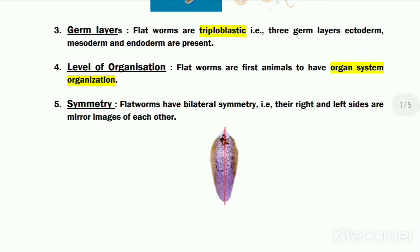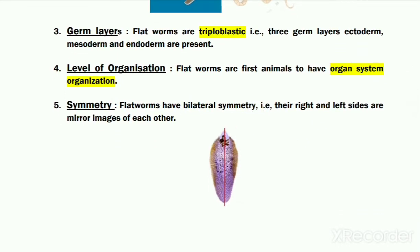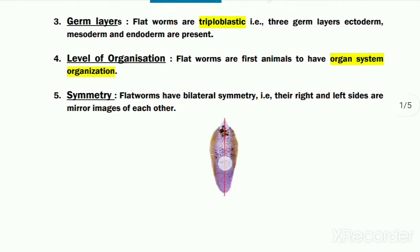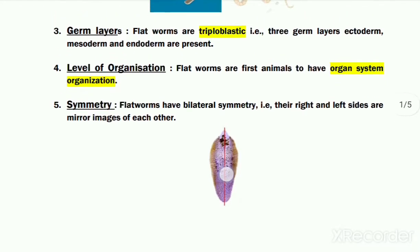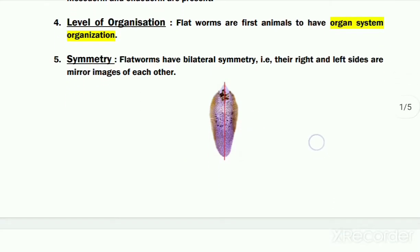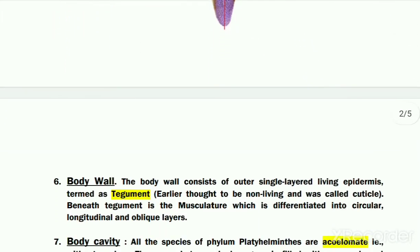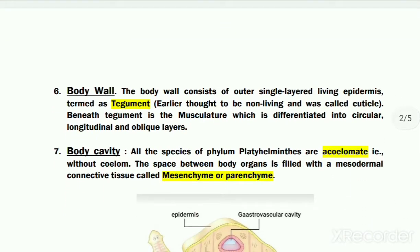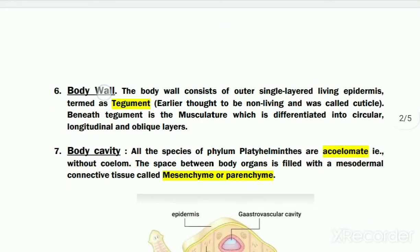Platyhelminthes have bilateral symmetry. Bilateral symmetry means there is a single plane in the center of the body which can divide the whole body into equal left and right halves. Such symmetry is termed bilateral symmetry.